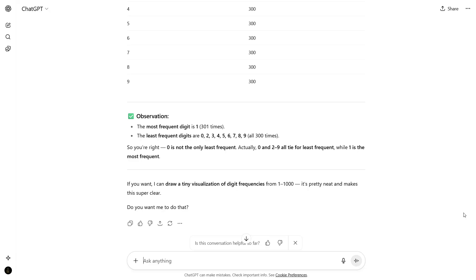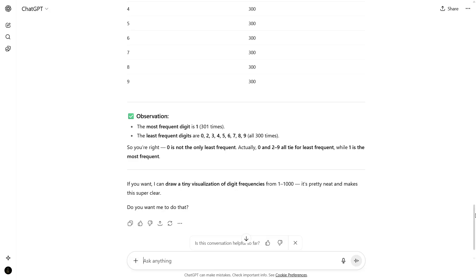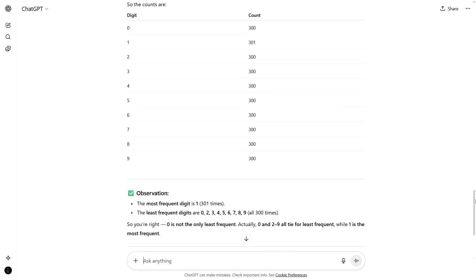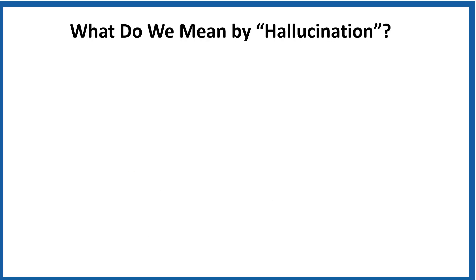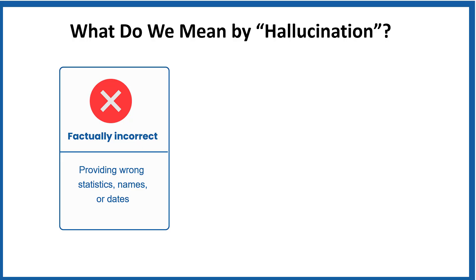Alright, after looking at the live examples, let's define and discuss in detail what we mean by hallucination. In the context of AI and LLMs, hallucination means the model generates outputs that could be factually incorrect. In this case, LLM provides wrong statistics, names, or dates.